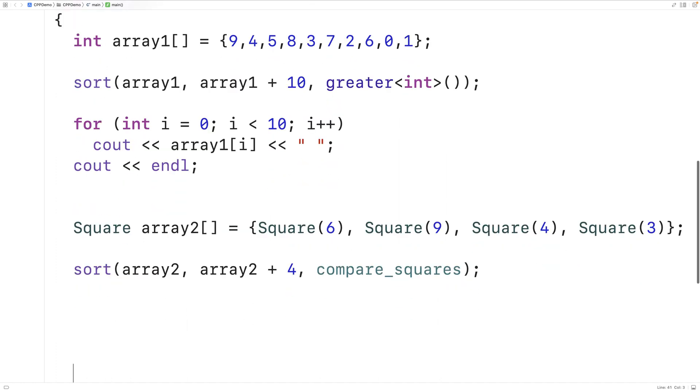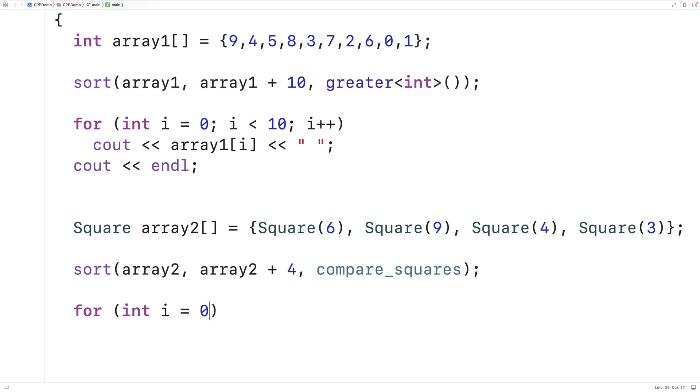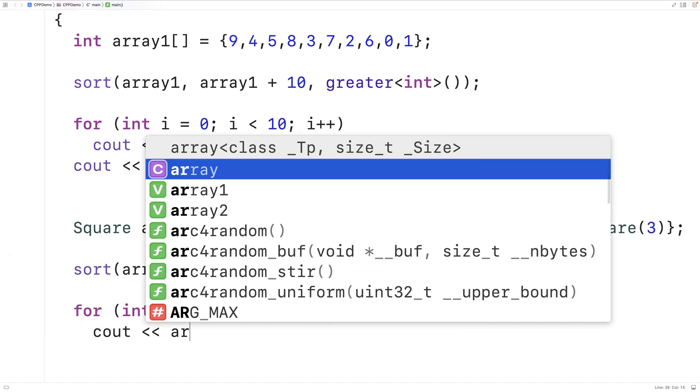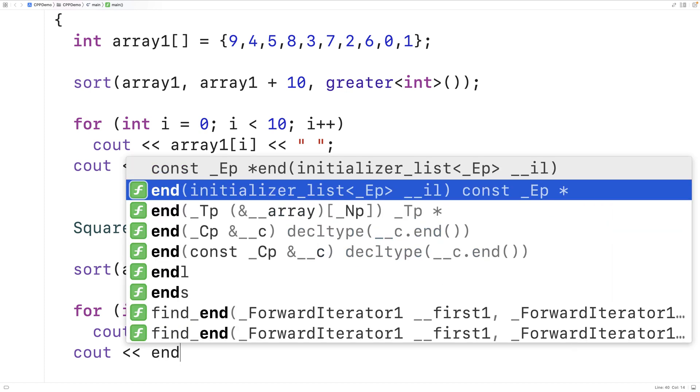When we're done we'll output the square sides in the now sorted array just so we can confirm that it is sorted. So we'll say for int i is equal to zero, i is less than four, i plus plus, and we'll output each square's side in this array so we can check to see that they are sorted. And we'll say cout end line here as well.